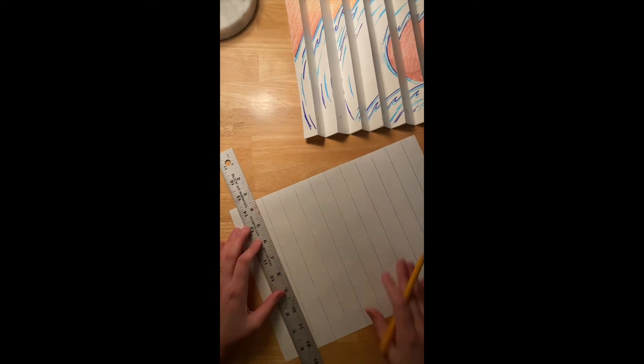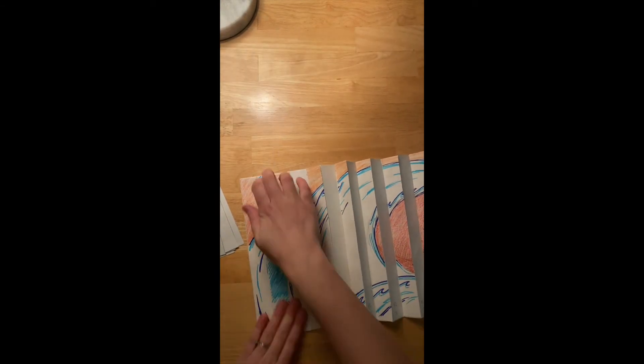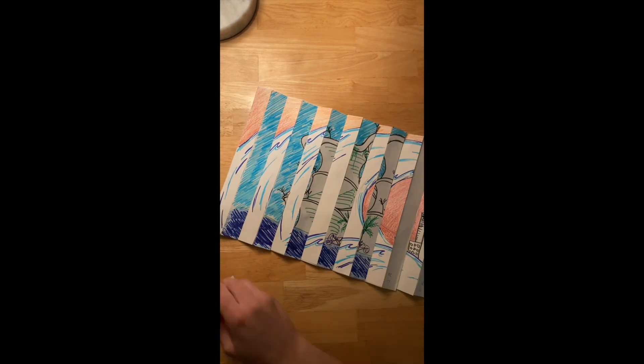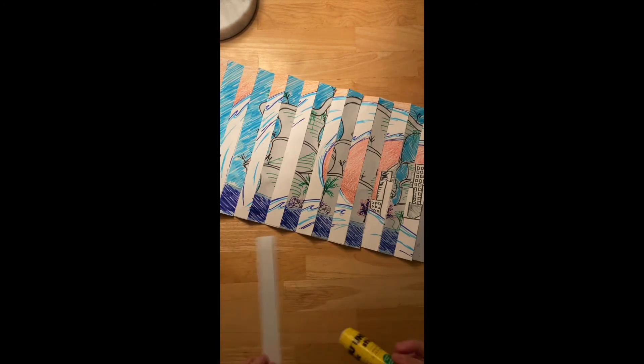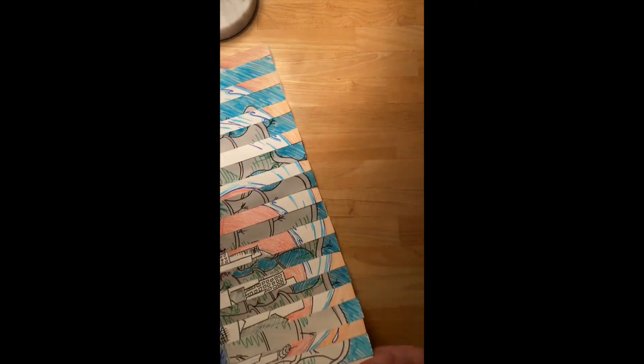So once again, marking one inch ticks across your page, cutting it into one inch strips, making sure to keep everything labeled, and then gluing your second paper down onto the remaining folds of your anamograph. One thing I like to do once I'm done is just refold everything, since I kind of flattened it as I was gluing, let it spring back into shape, and then you have your completed anamograph.